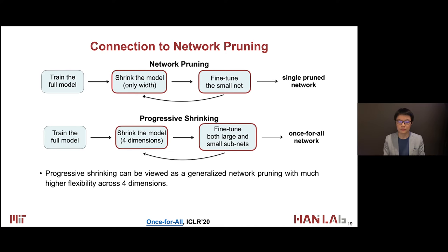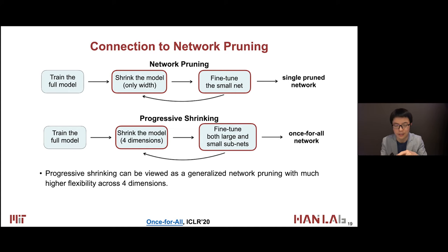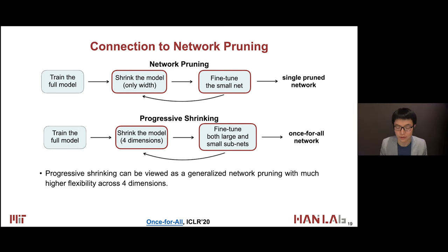The connection to network pruning: channel pruning only shrinks the width, but here we shrink the model across four dimensions — not only the number of channels, but also the depth, the resolution, and the kernel size. We can support large resolution or small resolution depending on available resources. Large kernel, small kernel, deep model, shallower model. During the fine-tuning stage, we fine-tune both the larger subnets and the smaller subnetworks, since we are supporting a broad spectrum of neural nets. Progressive shrinking can be thought of as a general case of network pruning.